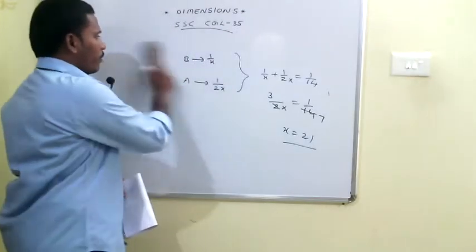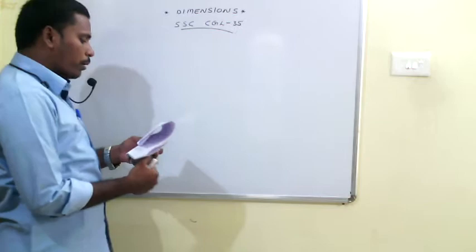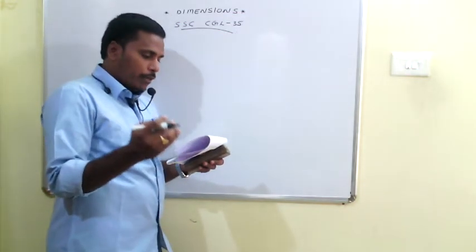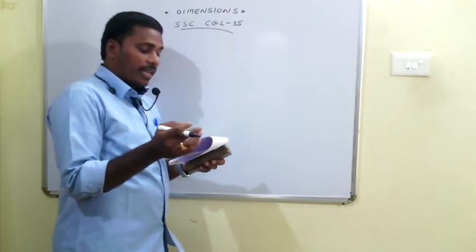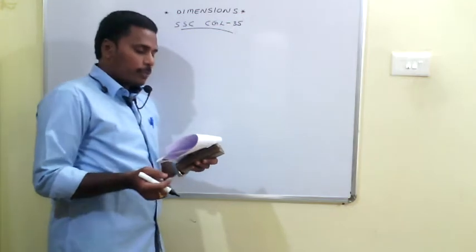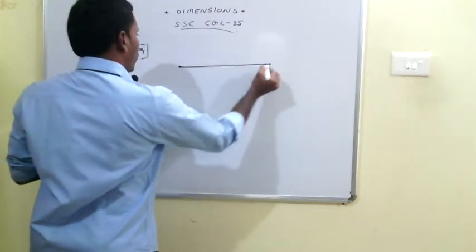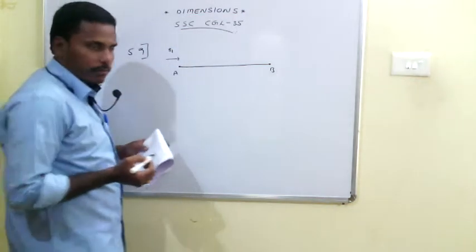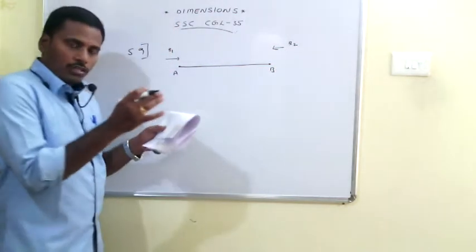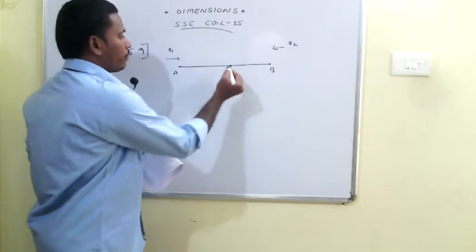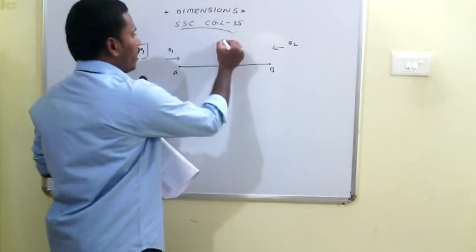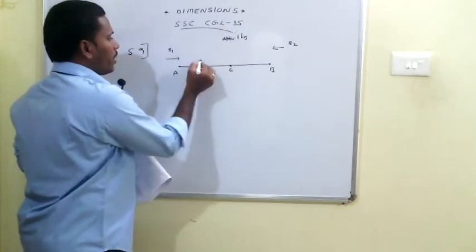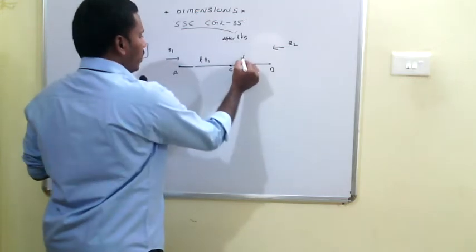The 59th problem: a train starts from A to B at 60 km/h, and another from B to A at the same time. After crossing each other, they complete their journeys in 3½ hours and 2⁴⁄₇ hours respectively. Let the speeds be S1 and S2, and suppose they meet at point C after T hours. The first train covers distance TS1 and the second covers TS2 before meeting.